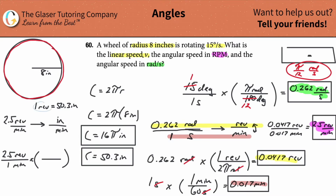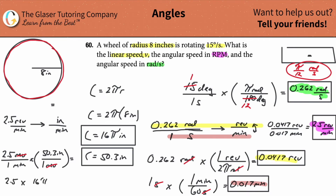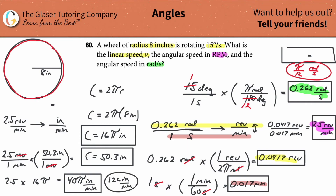We place revolutions in the denominator so they cancel and the inch value in the numerator. So we multiply 2.5 by 16π. Since 16 times 2.5 equals 40, the exact answer is 40π inches per minute. Multiplying 40 by π gives approximately 125–126 inches per minute. Both the exact form 40π and the decimal approximation are acceptable answers.